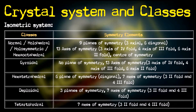Moving to the gyroid class, all planes of symmetry are gone — there is no plane of symmetry — but it still possesses 13 axes of symmetry, including three axes of fourfold, four axes of threefold, and six axes of twofold symmetry.